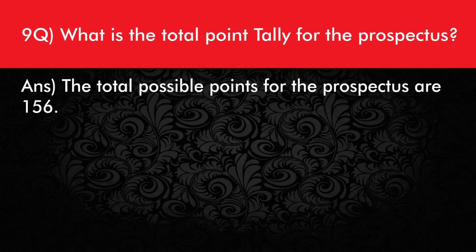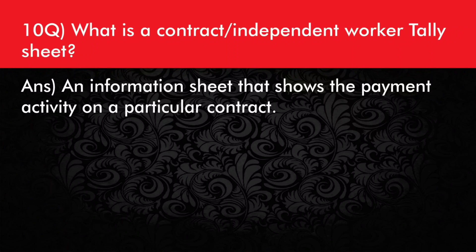What is the total point of Tally for the prospectors? The total possible points for the prospectors are 156. What is a contract or independent worker Tally sheet? It is an information sheet that shows the payment activity on a particular contract.